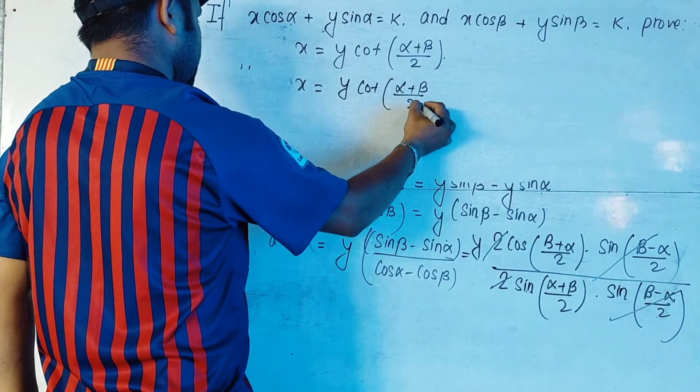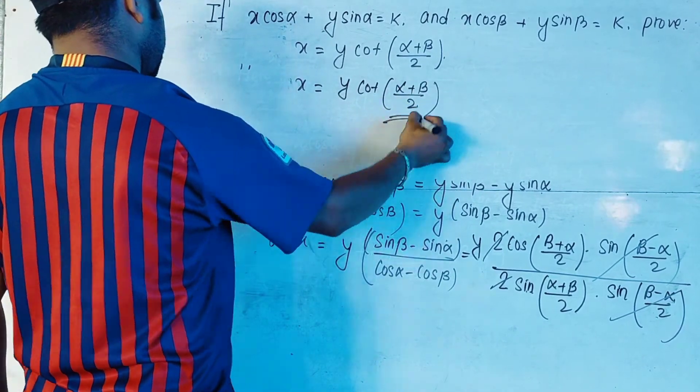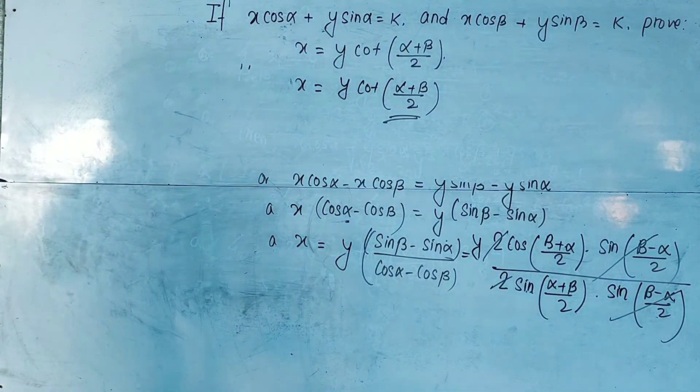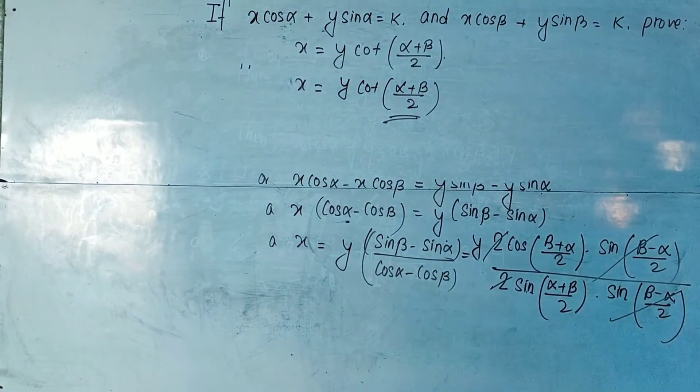This simplifies to x = y·cot((α + β)/2), since cos over sin is cot. This is how we prove the given result.